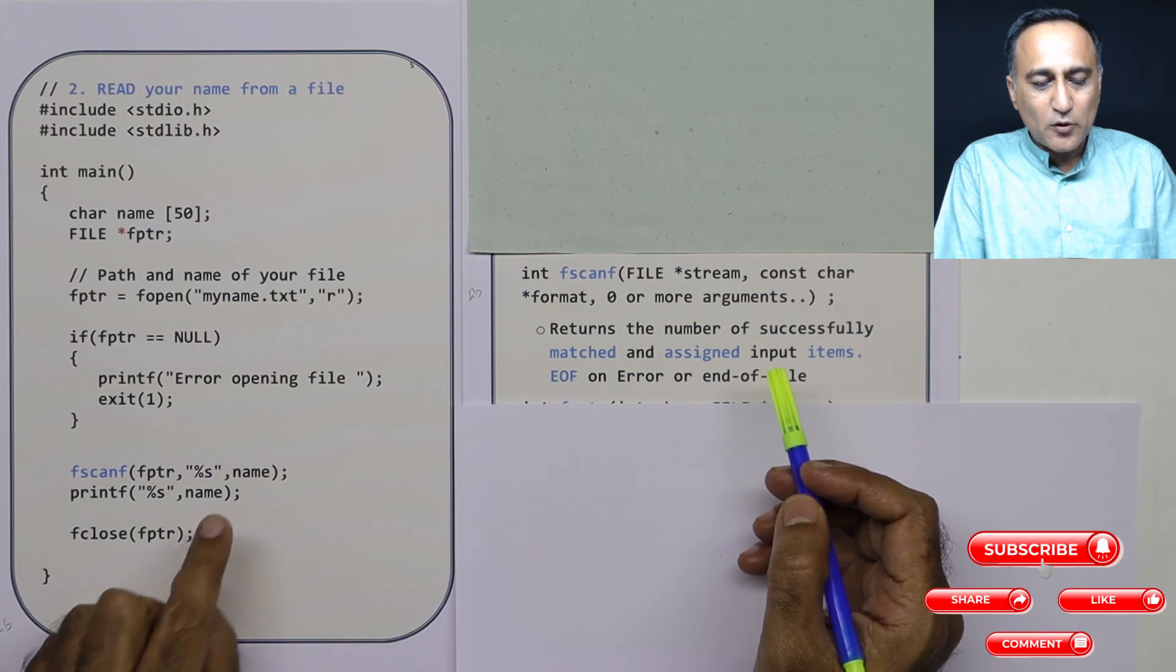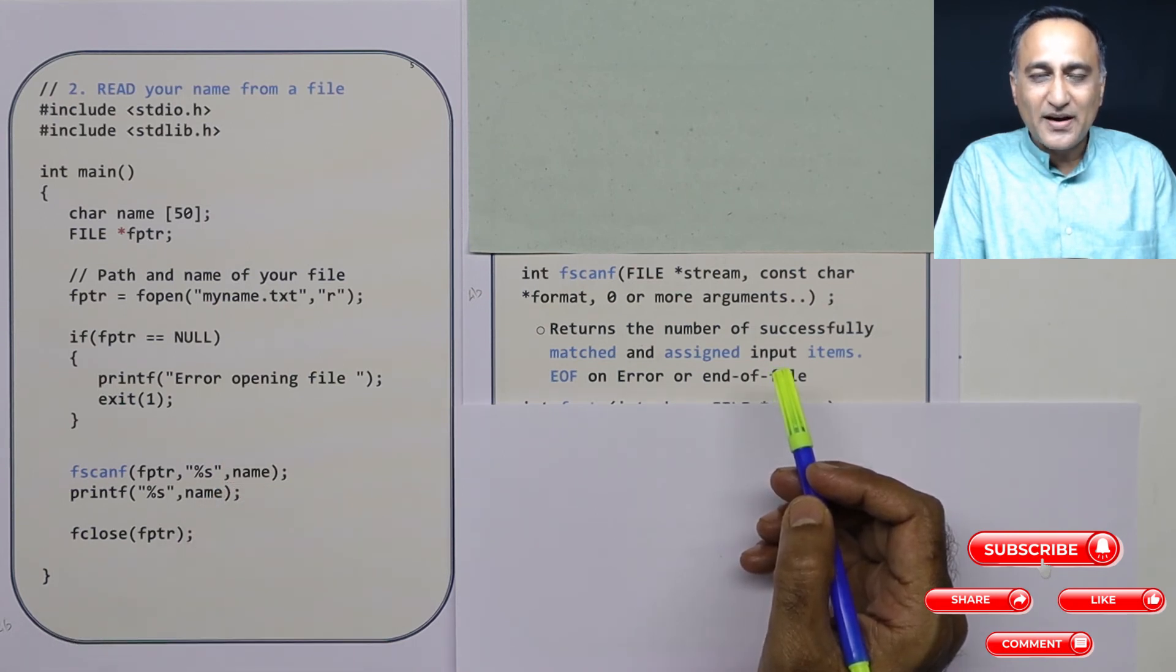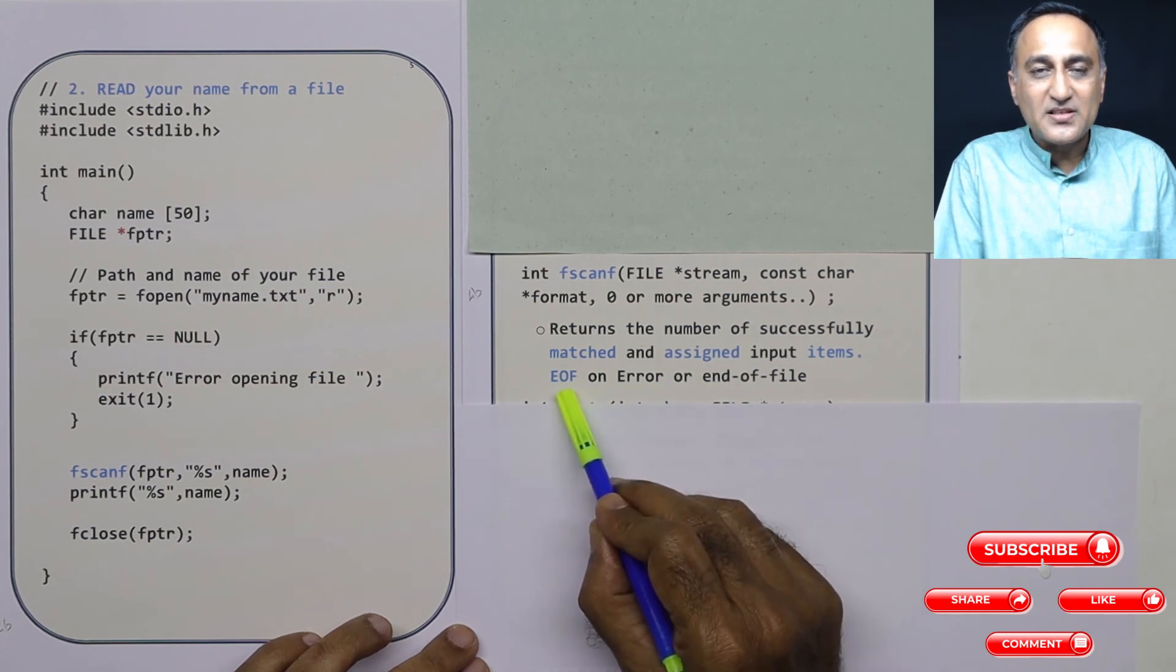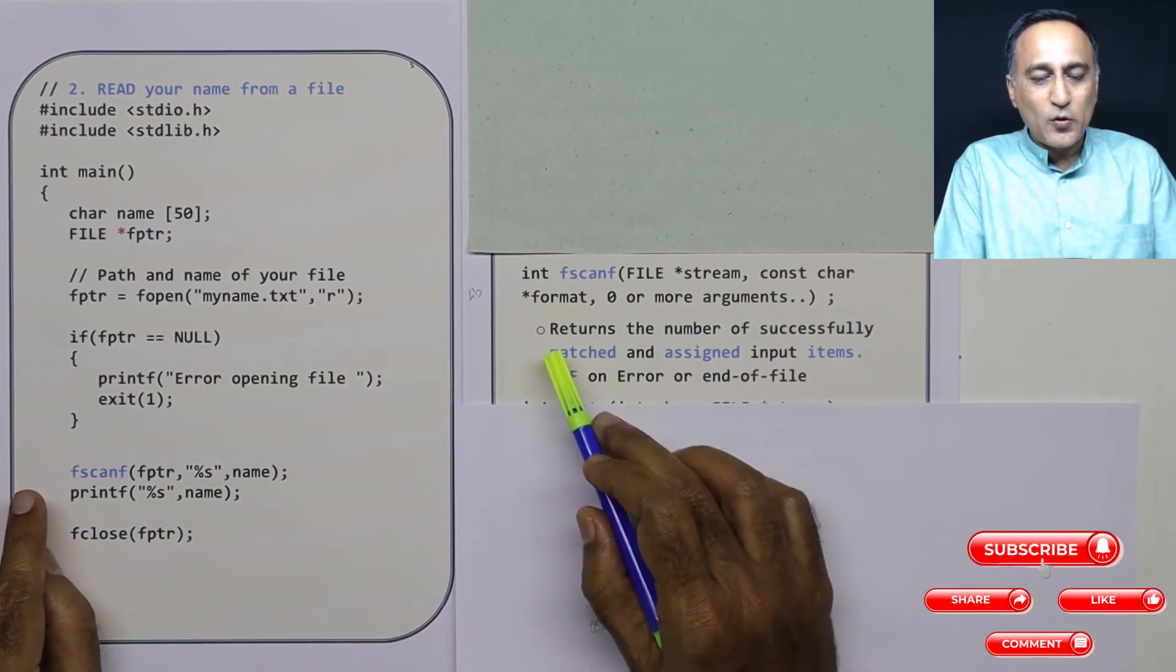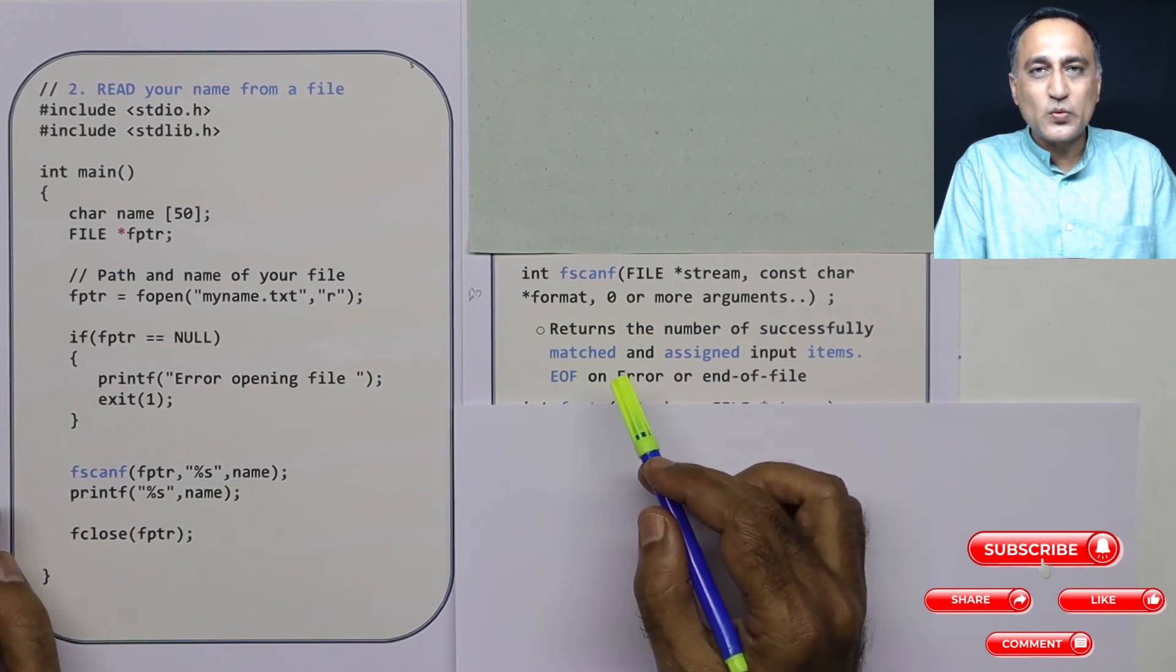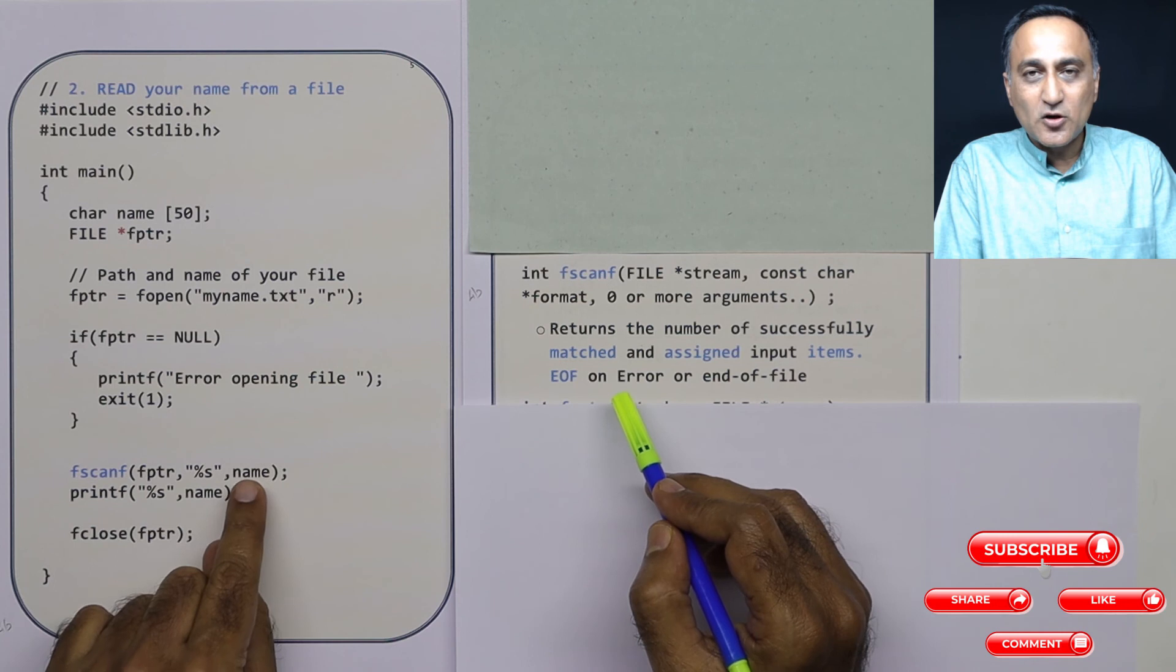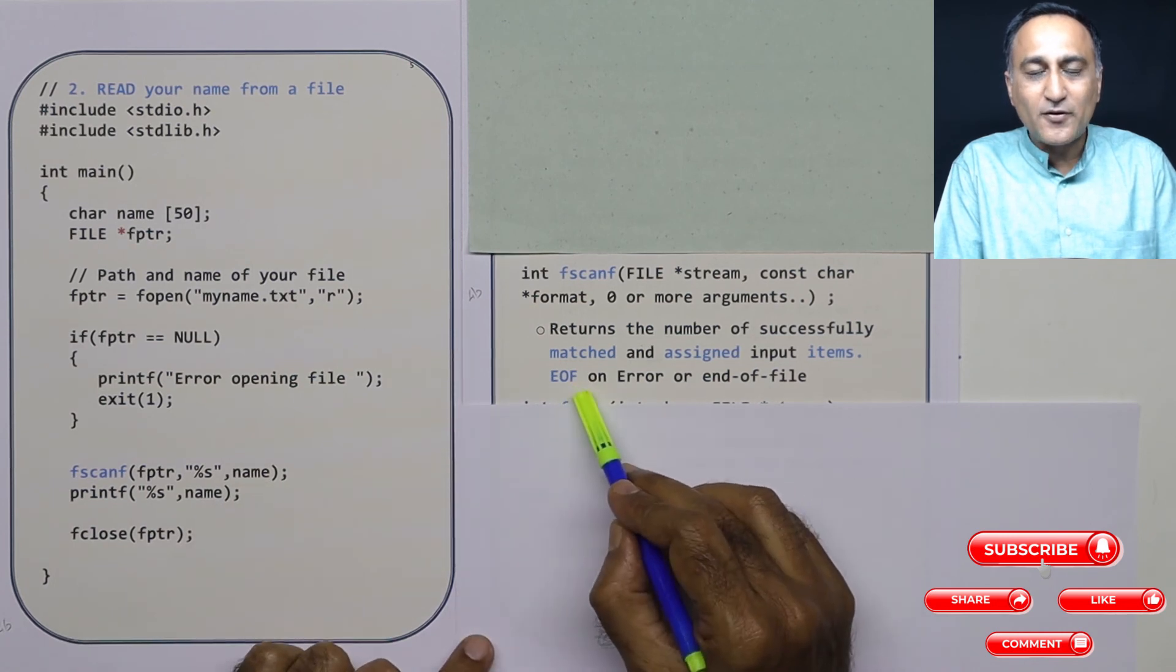But suppose I'm not able to read any data, that means the file doesn't have any data, it is end of the file. Then you will receive the end of file value as the return value, it could be minus one or whatever it is depending on the operating system. So if it's not able to read, you will get the end of file message.